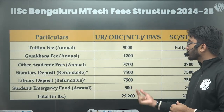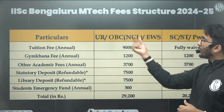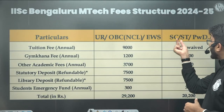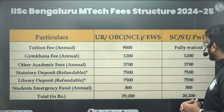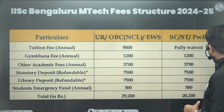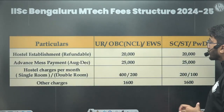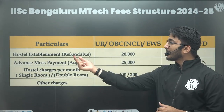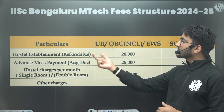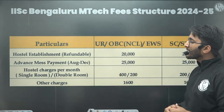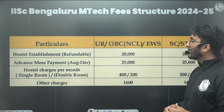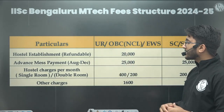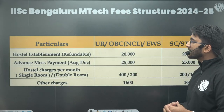So the total is ₹29,200 for General, OBC-NCL, and EWS categories, and for SC, ST, and PWD category, the total is ₹20,200. For hostel charges, the establishment charges (refundable) is ₹20,000, advance mess payment is around ₹25,000, and other charges are around ₹1,600.